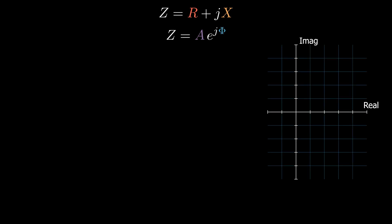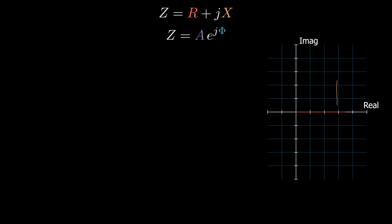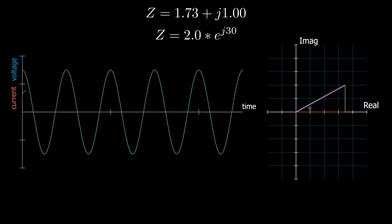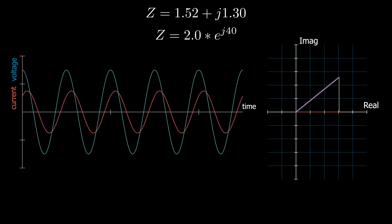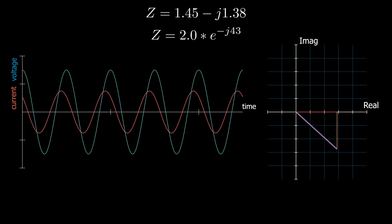Impedance can be represented in a complex plane using the rectangular or polar form. The angle from the real axis determines by how much the voltage will lead or lag the current in that impedance — the phase difference between the voltage and current. If the angle phi is positive, then the impedance is inductive and the voltage leads the current by phi degrees. When it is negative, the impedance is capacitive and the voltage lags the current.